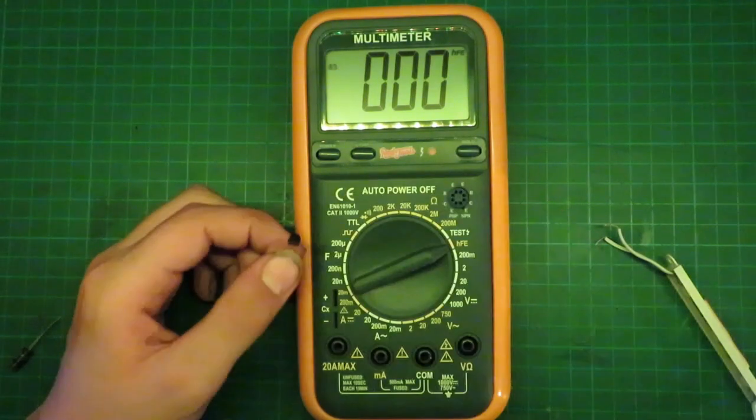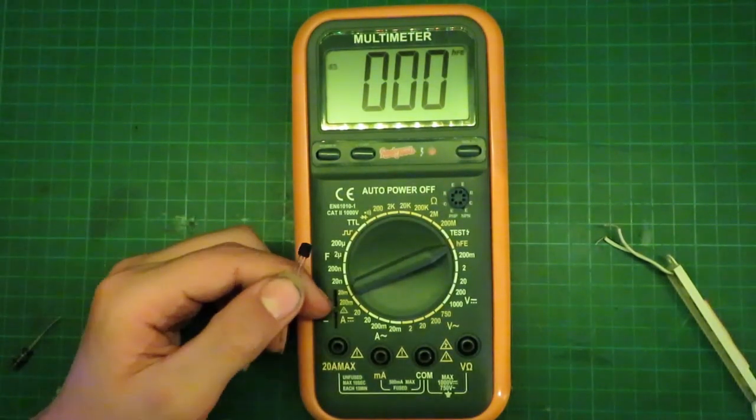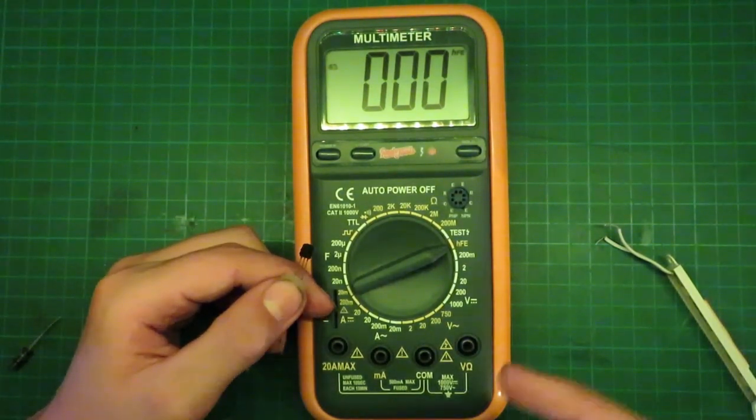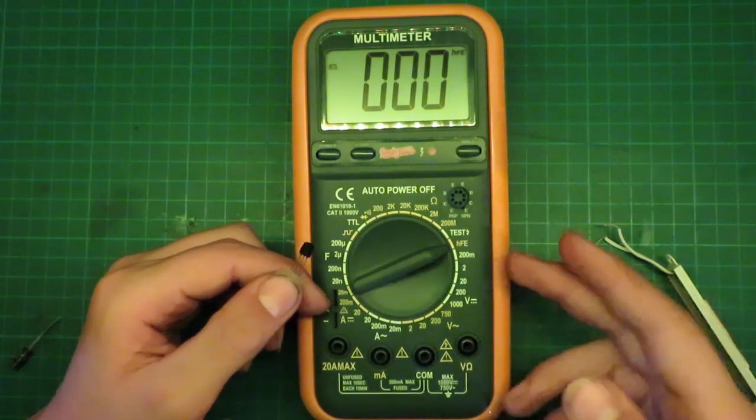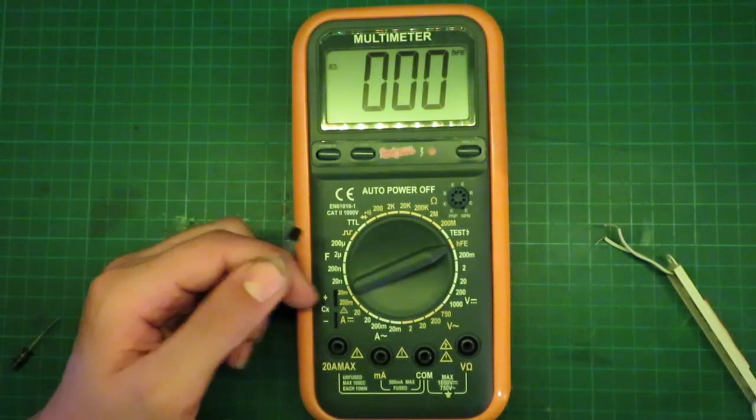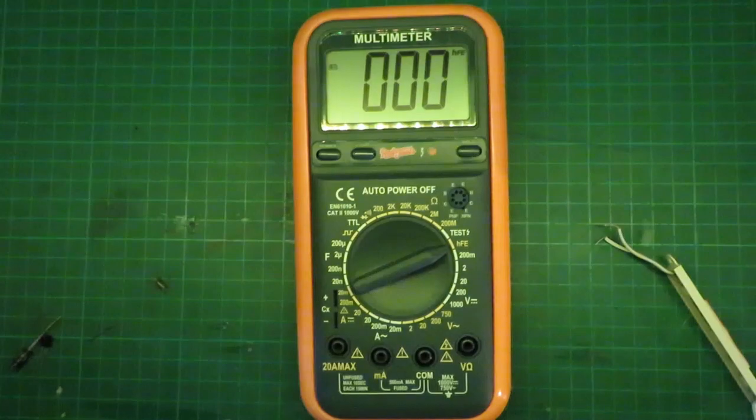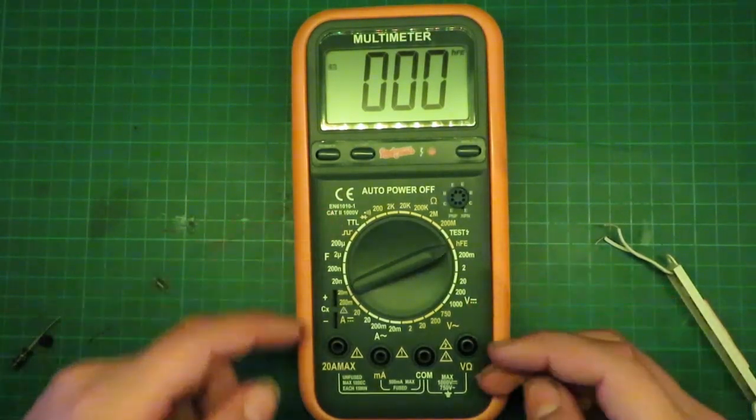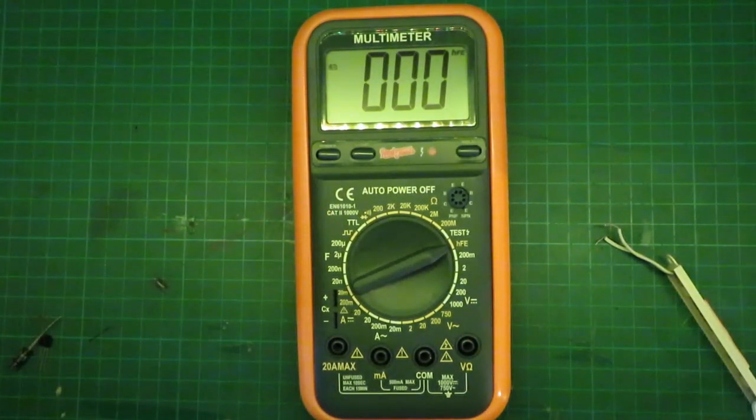You can easily find some more videos about transistors to explain what HFE is. But right now I'm just telling you how to use a multimeter. And there's also some more things on this multimeter. And you can normally refer to your owner's manual to find out what that is.